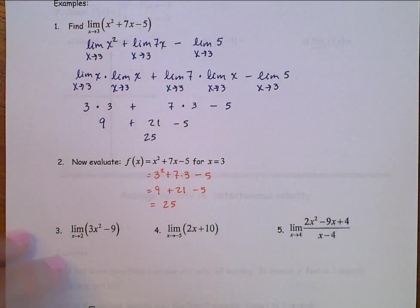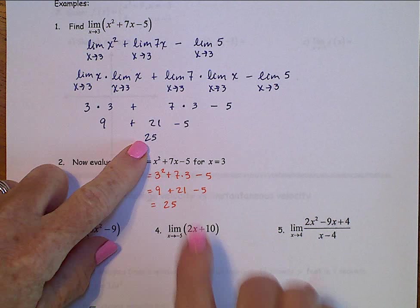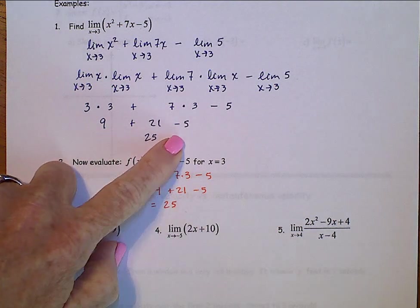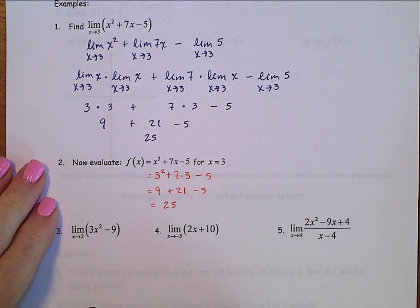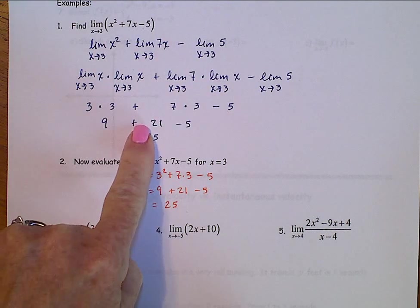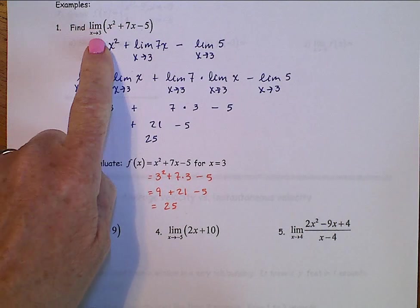25, hmmm, alright, notice that we got the same thing, 25. You should have recognized those numbers right here, 9, 21, and negative 5. So, why on earth should we go through all of this work up here, when it looks like we could just take this x squared plus 7x minus 5, and plug in that 3?